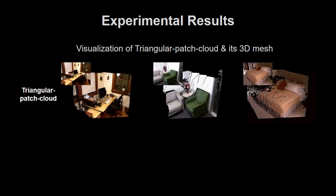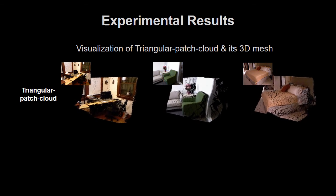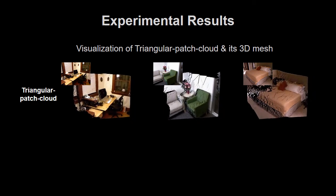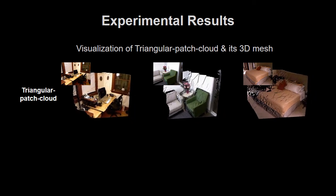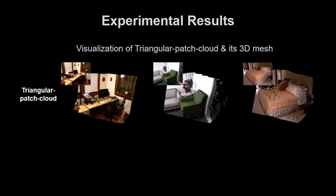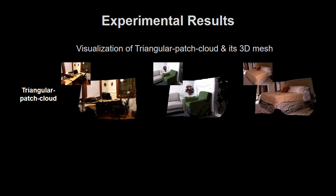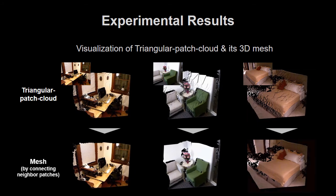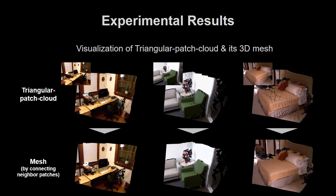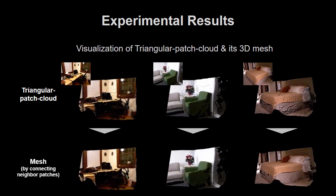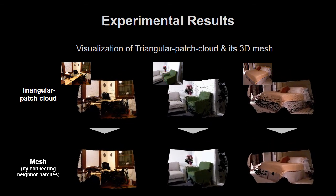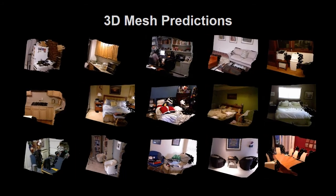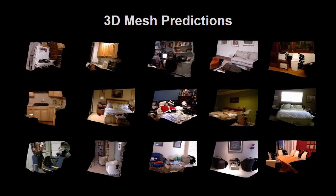We show the visualizations of our Triangular Patch Cloud representation here. One of the advantages of our method is that we can easily convert to mesh representation. These are results connecting neighboring patches in our representation — we can obtain very clean 3D structures. These are the 3D scene meshes predicted by our framework.